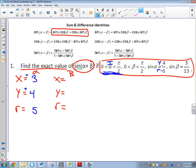Then I look for my beta information. If beta is five over thirteen, that means y over r, so my y is five, r is thirteen. Pythagorean theorem to find my x, it's twelve. Again, I'm between zero and pi over two, so I'm in quadrant one, positive, positive.